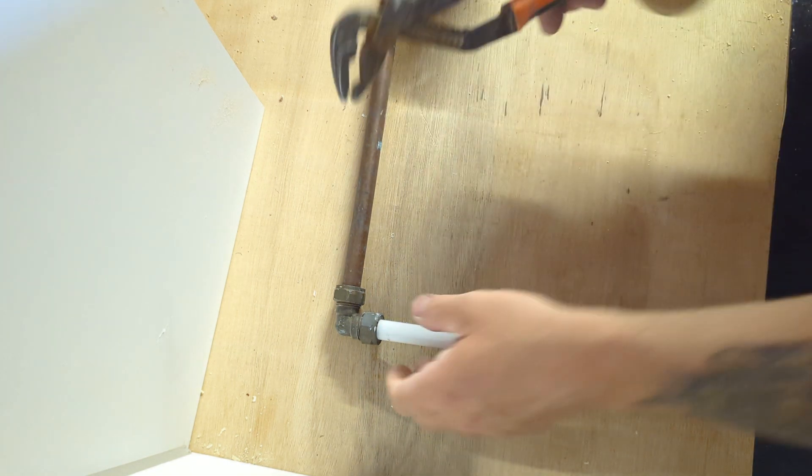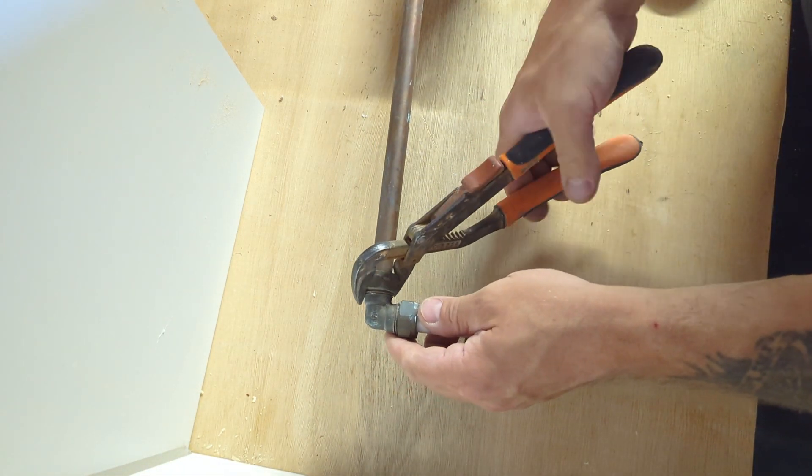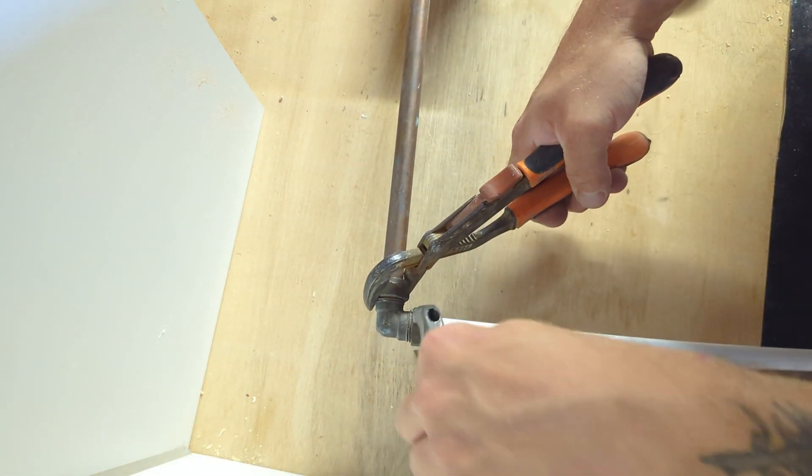Then you can turn the water on and test it. If you've got a leak, try nipping it up another quarter of a turn at a time. But if you over-tighten it, you can have big problems and you won't get a seal.